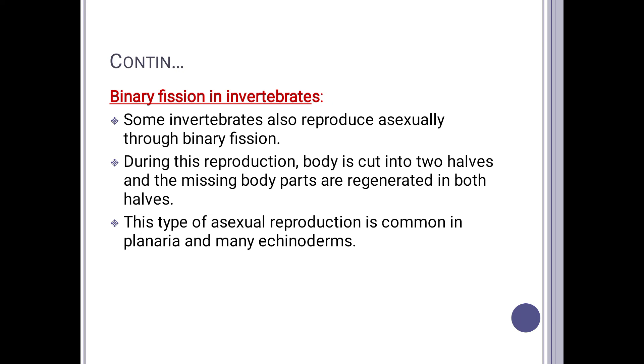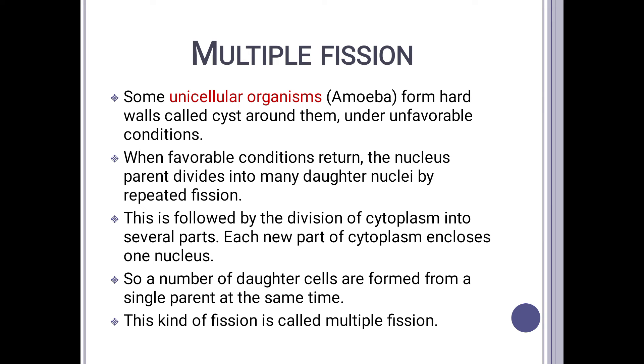Next we look at binary fission in invertebrates — in planaria. When the organism's body is cut into two halves, meaning fission occurs, the missing part of the body automatically regenerates due to mitosis. This type of asexual reproduction occurs in planaria and many echinoderms. As you can see here: the parent planaria's body divides into two parts — the head separates and the tail separates. The missing part regenerates with the head (tail grows back) and the missing part that was the head regenerates with the tail — producing exact copies of the parent planaria.